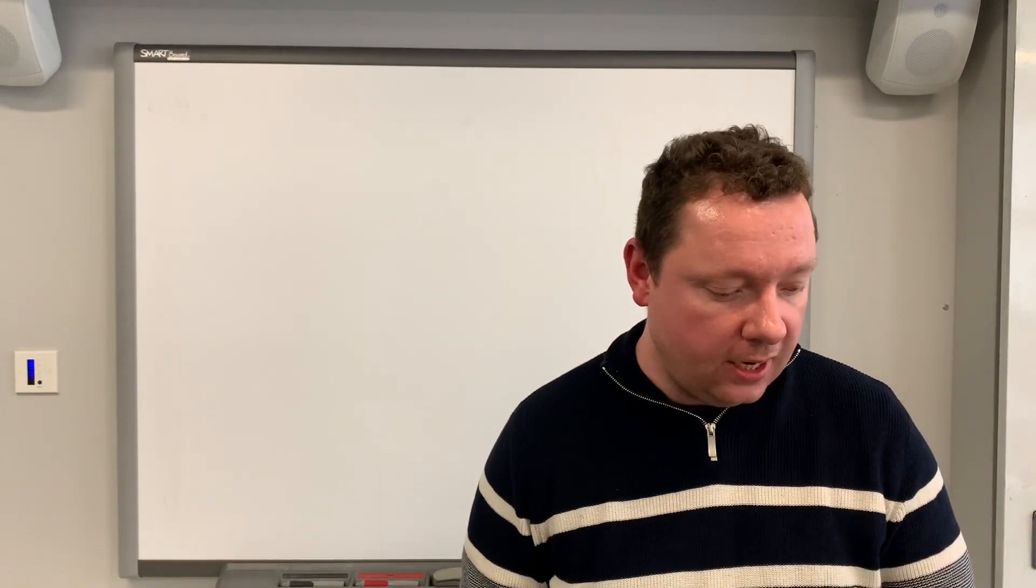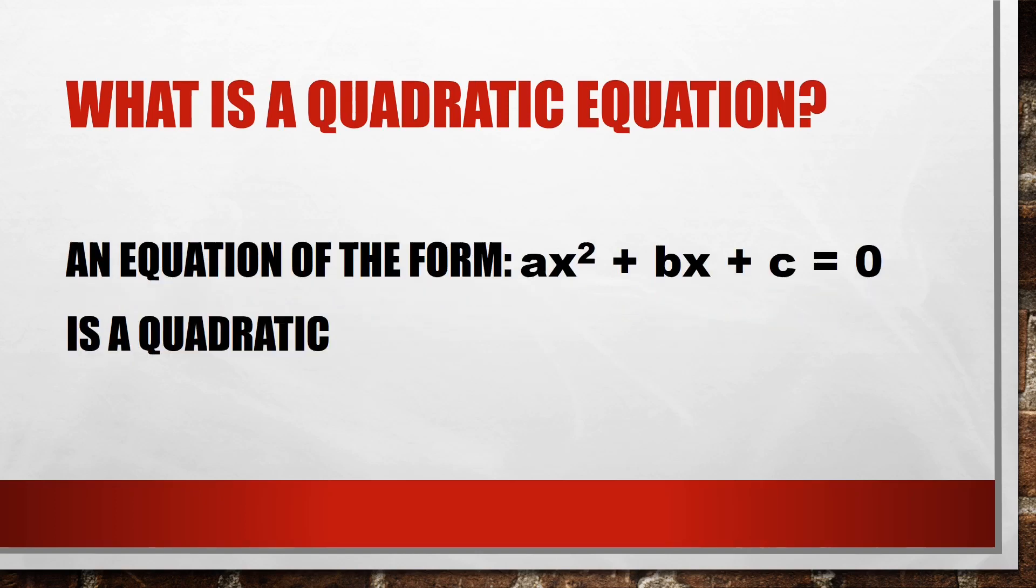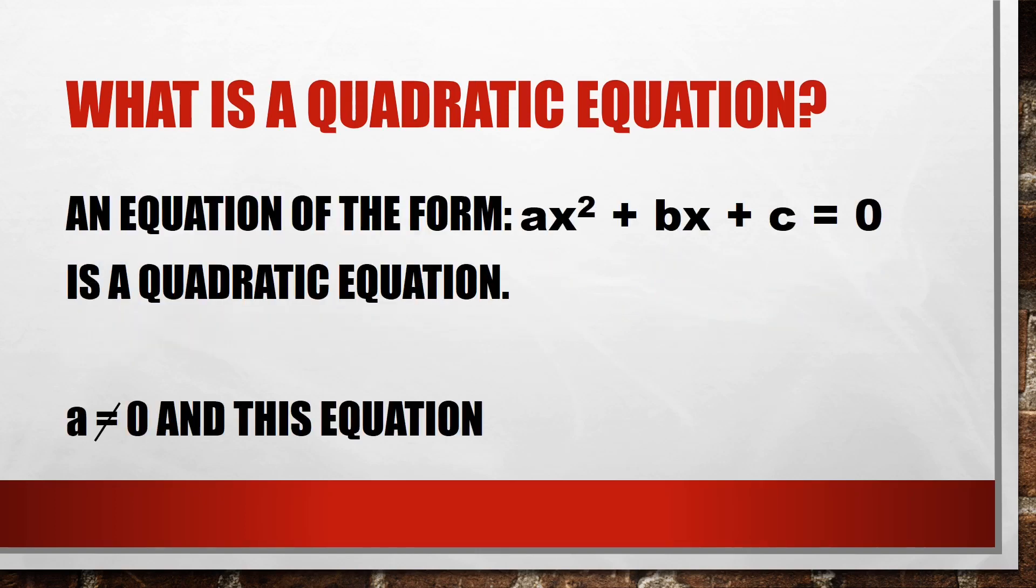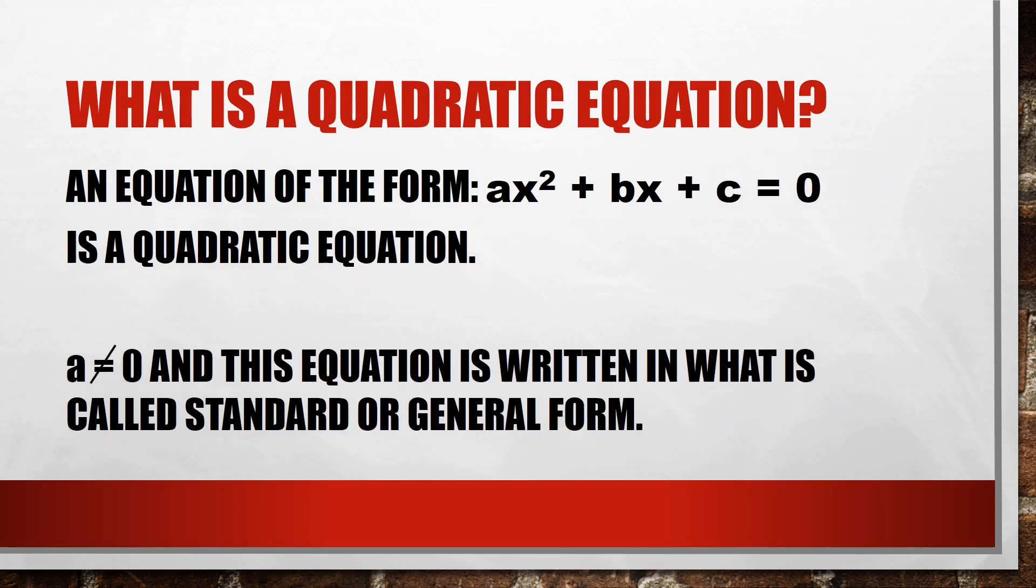Hi, Mr. Clown here from Clown Maths. Today we're going to be looking at what is a quadratic equation. An equation of the form ax² + bx + c = 0 is a quadratic equation. a doesn't equal zero and this equation is written in standard or general form.